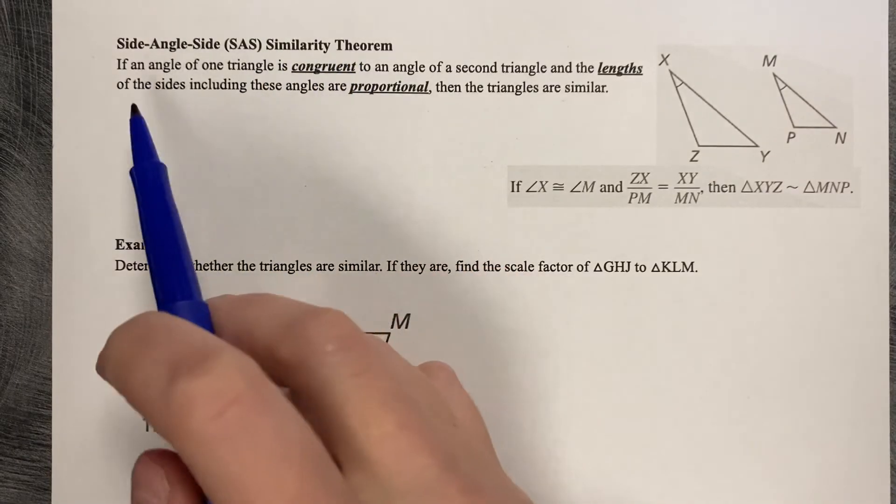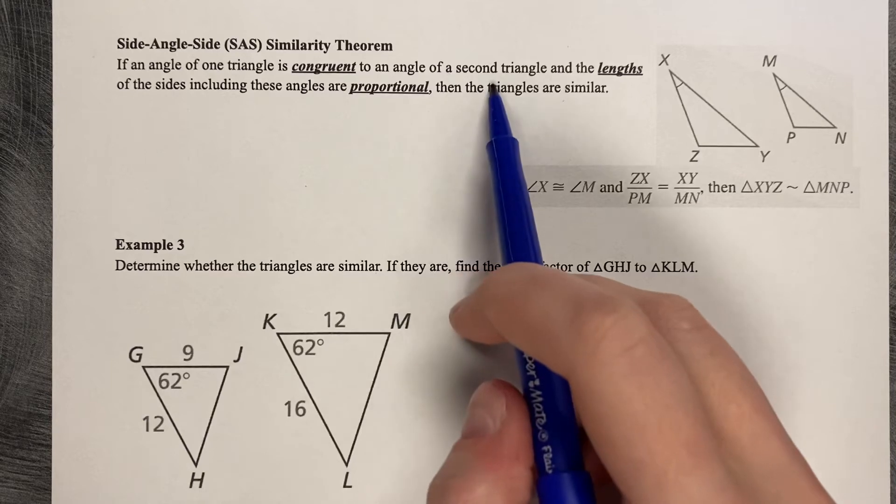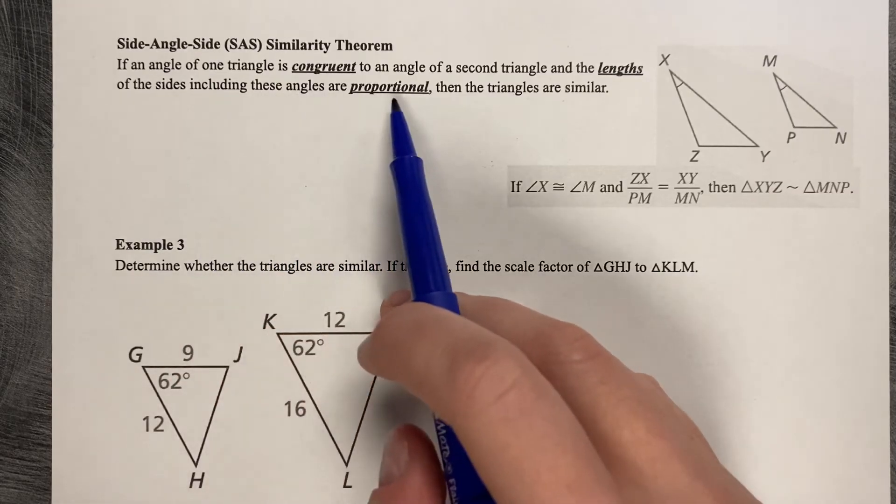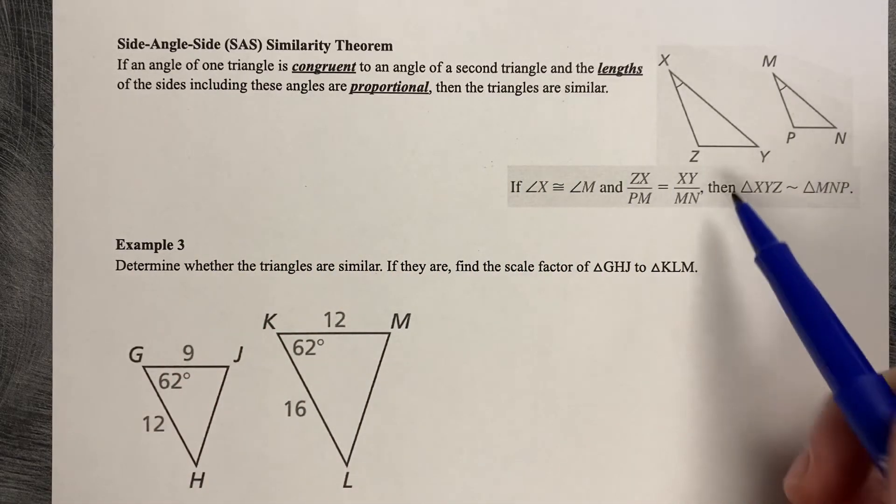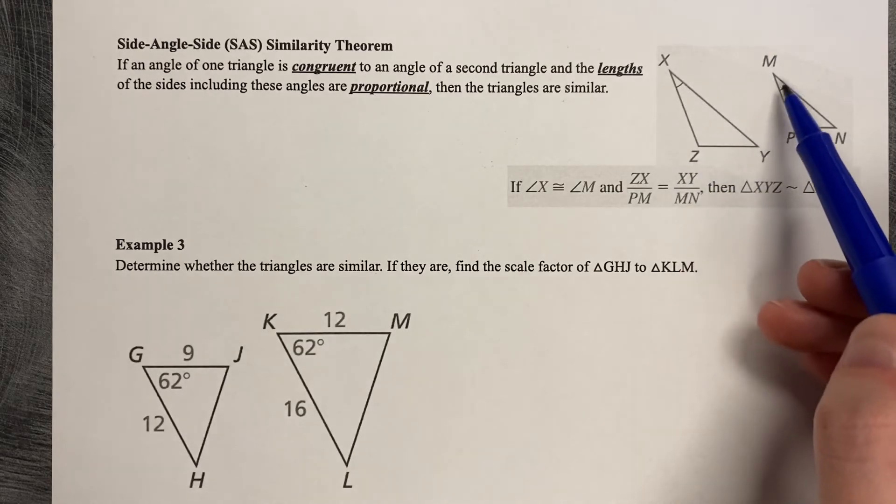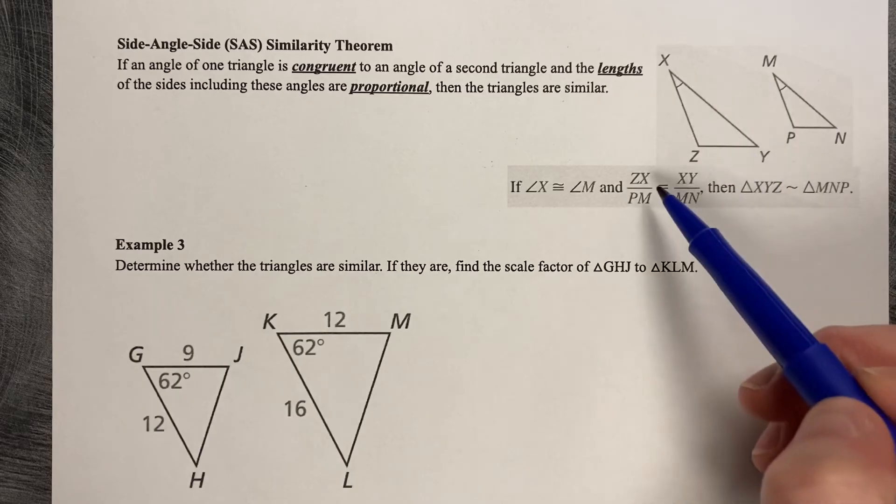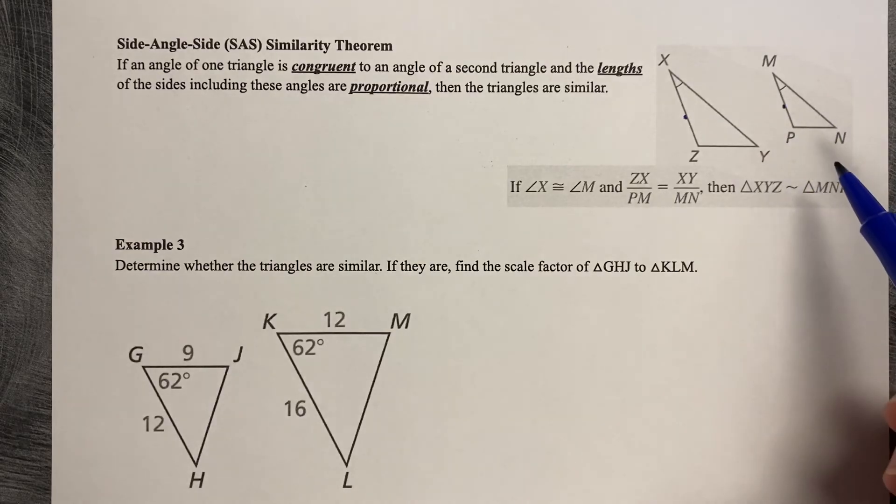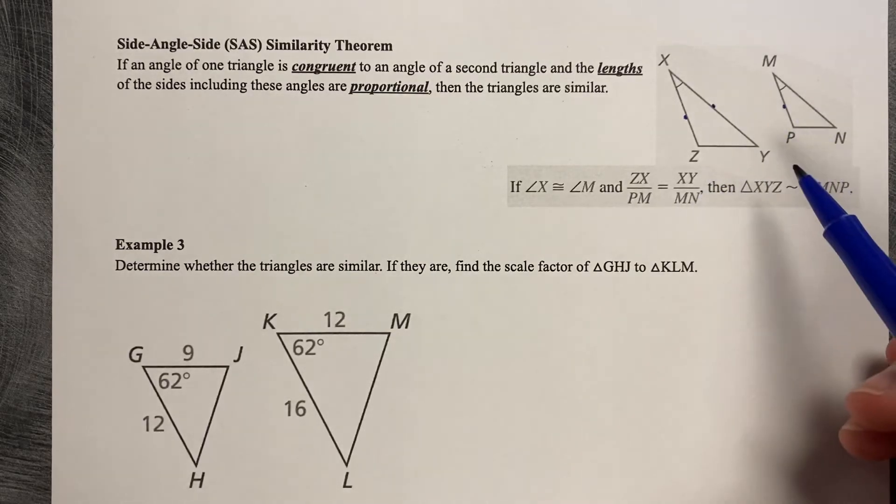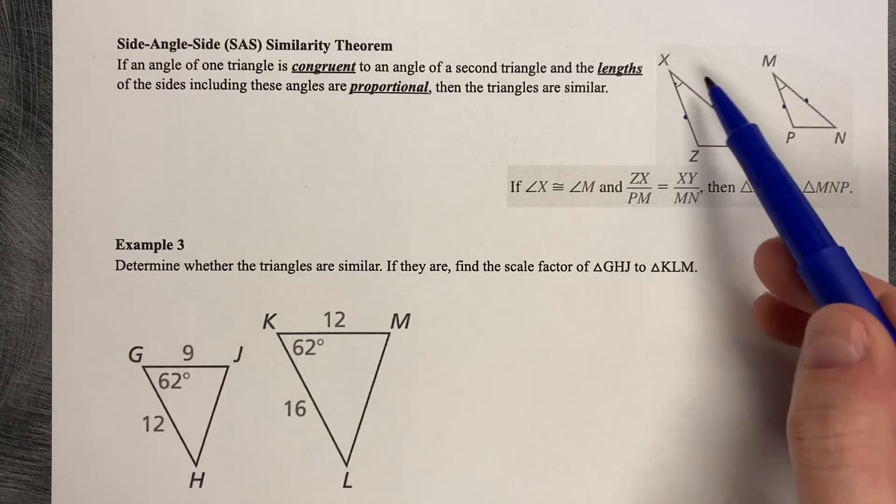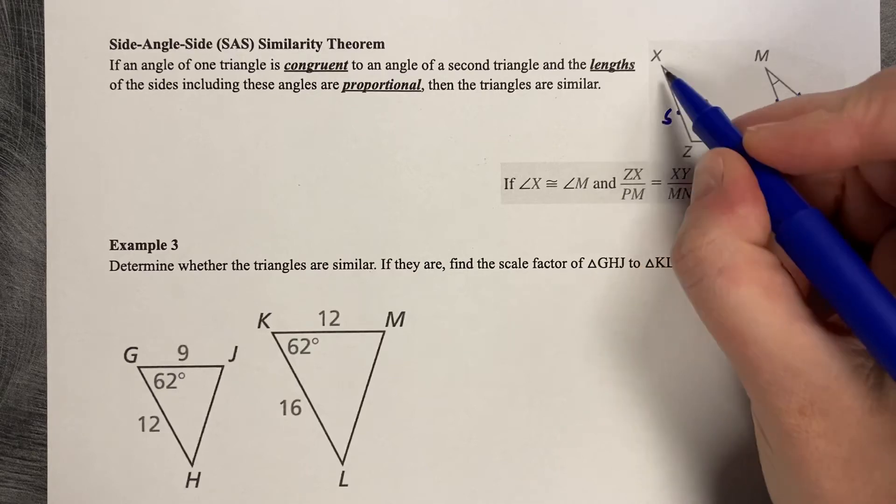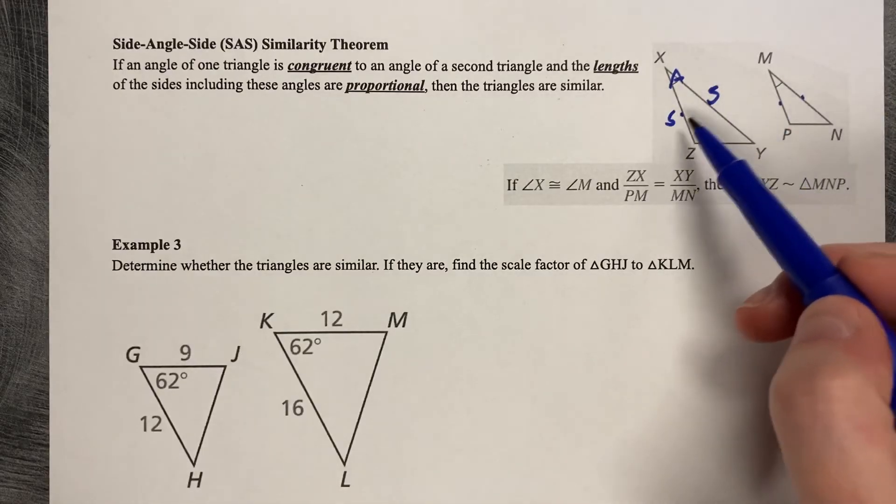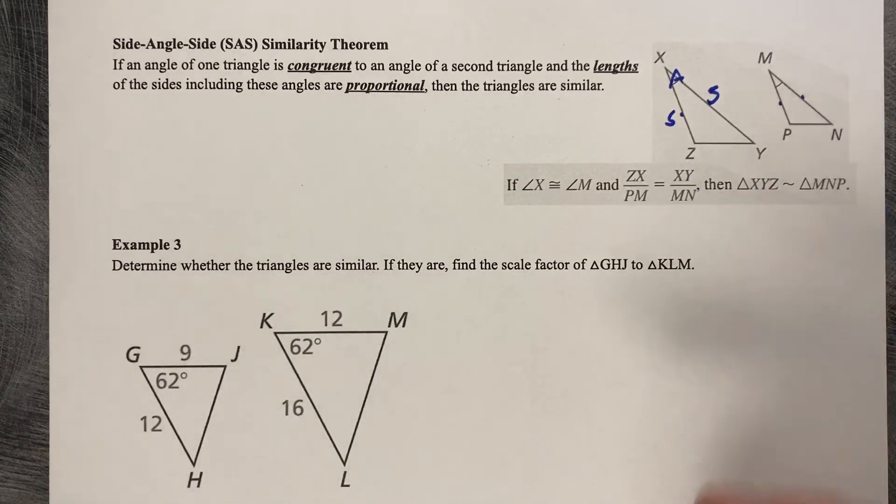Another method for proving that triangles are similar to each other is SAS similarity theorem. If an angle of one triangle is congruent to an angle of a second triangle, so the angles are congruent, and the lengths of these sides including these angles are proportional, then the triangles are similar. So here's our picture. Angle X and angle M are congruent to each other, and then the side length ZX is proportional to PM, and XY is proportional to MN. So we can see SAS. Just like we did with the congruence theorems, but this time the side lengths have to be proportional and not congruent.